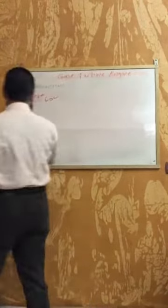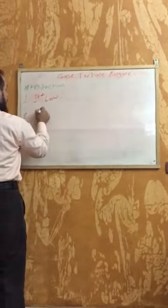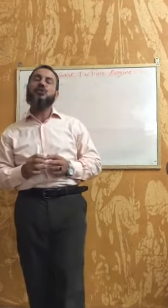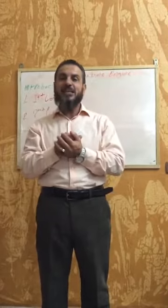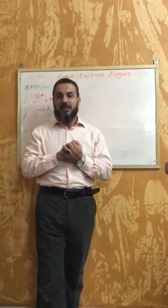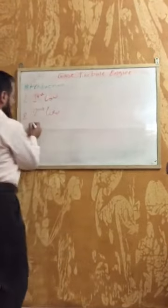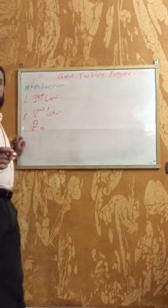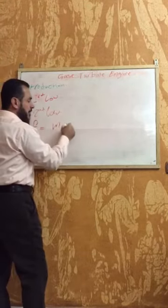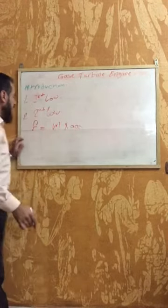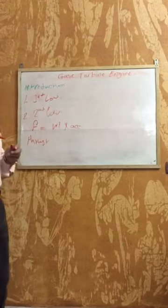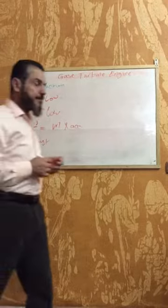The second law of motion says that the acceleration of a body is directly proportional to the force causing it, and inversely proportional to its mass. Force equals mass multiplied by acceleration. Here, force represents the thrust produced by the engine.